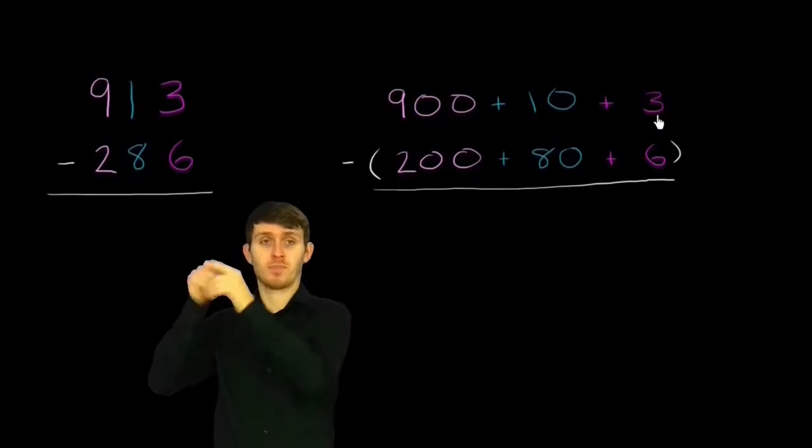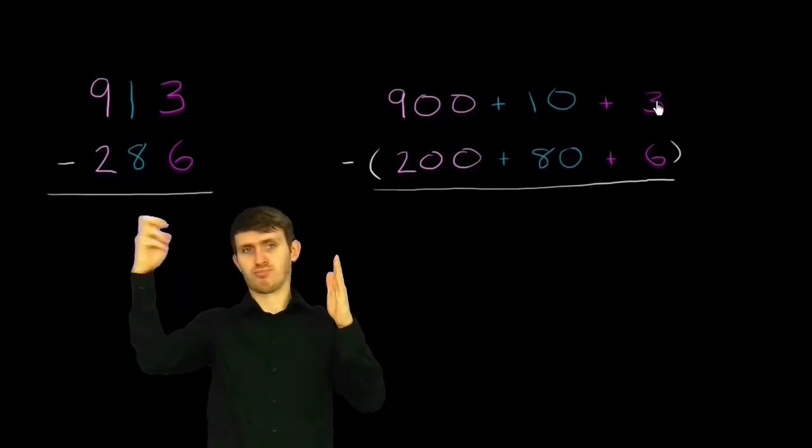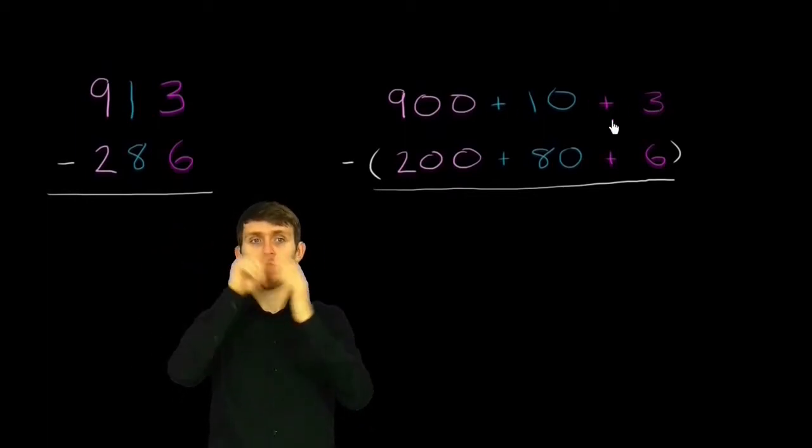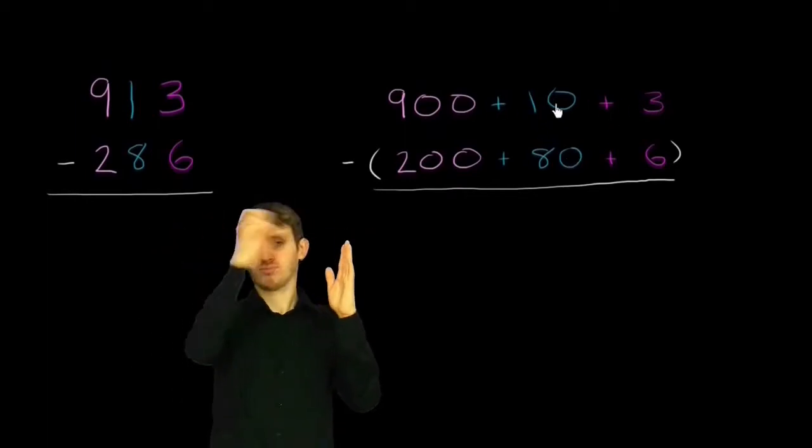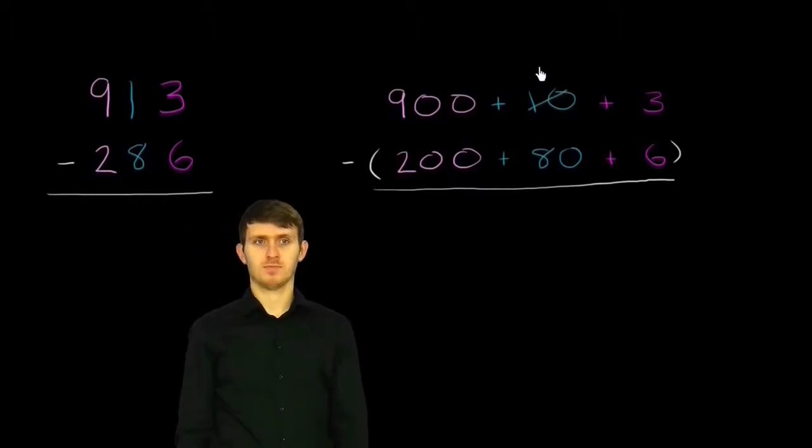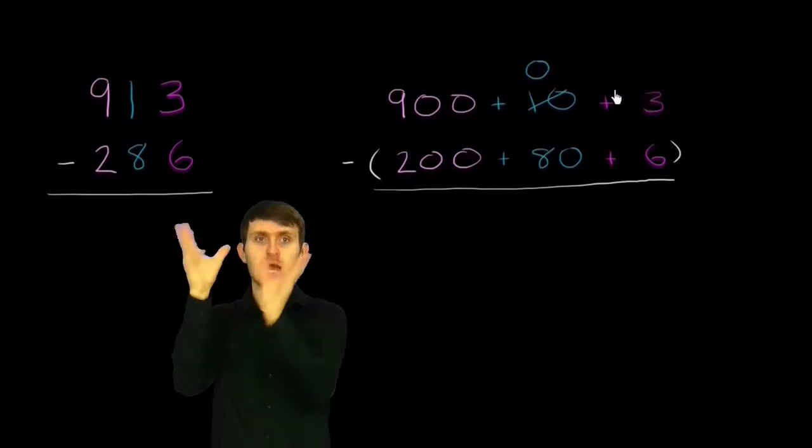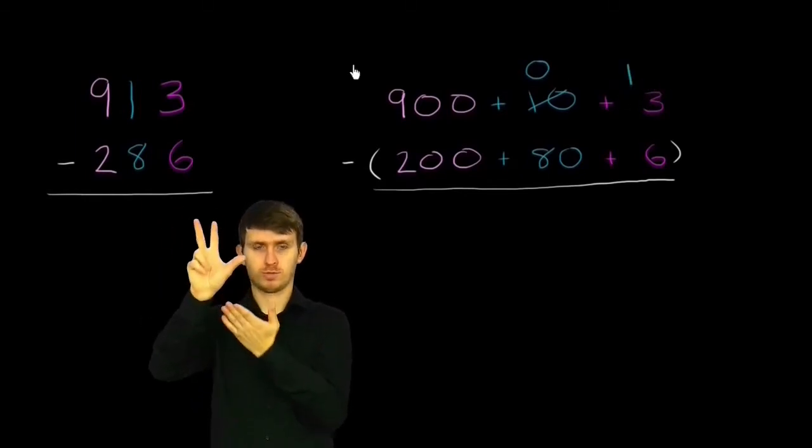So let's say this scenario right over here where we have this 3 and we want to take some value from one of the other places. I could take 10 from the tens place. I could take 10 from the tens place, so then this is going to become 0. And if I give that 10 to the ones place, so 10 plus 3 is 13.